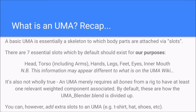Now for the main bit — for those of you that need a recap, we're going to look at Anuma. Anuma is basically a skeleton to which body parts are attached via various slots. There are essentially seven essential slots which by default should exist: a head, a torso component which includes arms, hands, legs, feet, eyes, and an inner mouth. For the purposes of UMA 2.0, these are the main default components you'll see. The main five we'll be working with are the head, torso, hands, legs, and feet.